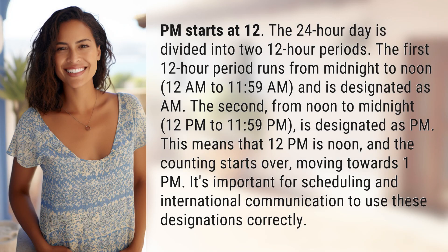PM starts at 12. The 24-hour day is divided into two 12-hour periods. The first 12-hour period runs from midnight to noon, 12 AM to 11:59 AM, and is designated as AM. The second, from noon to midnight, 12 PM to 11:59 PM, is designated as PM.